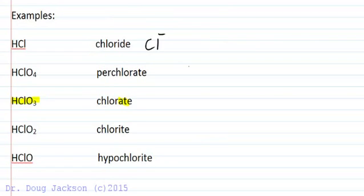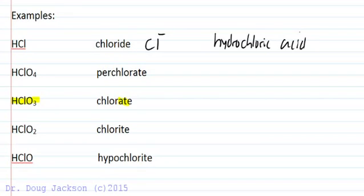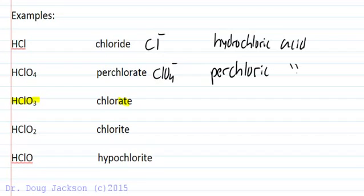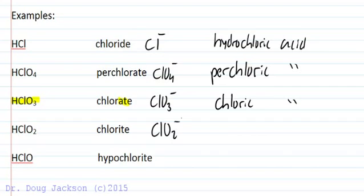Chloride (Cl-) gives hydrochloric acid — 'hydro-ic acid'. Perchlorate (ClO4-, one more oxygen than chlorate) gives perchloric acid — '-ate' goes to '-ic'. Chlorate (ClO3-) gives chloric acid. Chlorite (ClO2-, one less oxygen than chlorate) gives chlorous acid — '-ite' goes to '-ous'. And hypochlorite (ClO-, two less oxygens) gives hypochlorous acid. All of these require the word 'acid' at the end.